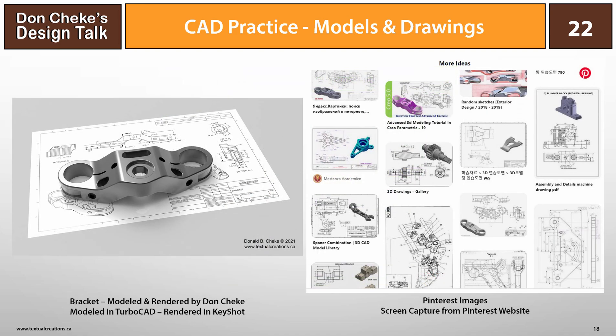Google image searches for mechanical drawings can produce useful results. Many folks who came before us have been practicing CAD and posting their results to share — there's nothing wrong with reviewing their work and trying to mimic what you see. Pictured here is a motorcycle front fork bracket that has been popular to model and can be seen in many social media forums like Pinterest. I modeled it in TurboCAD and recreated the drawing as well.